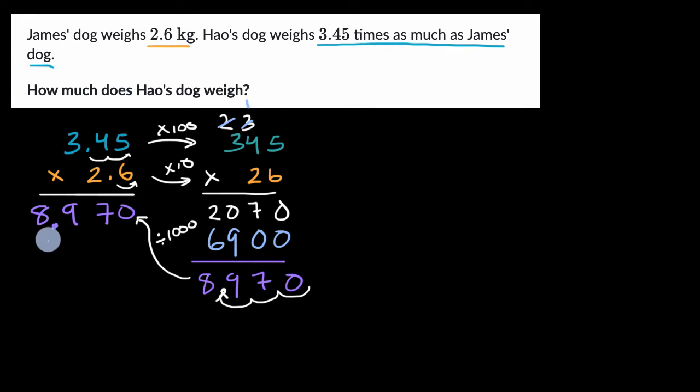But the most important thing is, does this make sense? That a number a little over three times a number a little over two, that should be between six and 12. It shouldn't be 89 or 897 or 0.8 or 8,970.